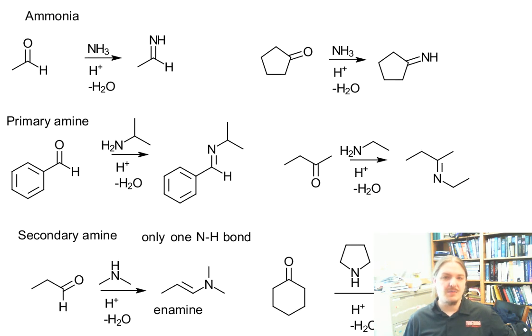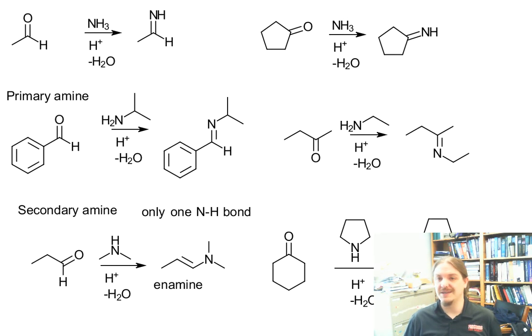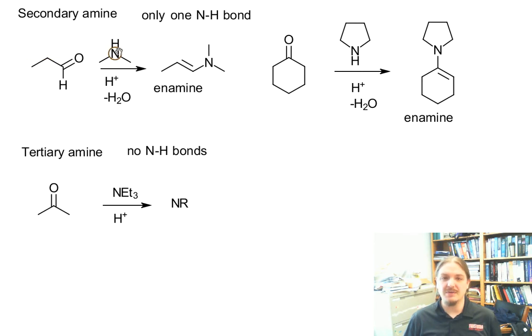To summarize: ammonia reacts with aldehydes and ketones to make imines with two N-H bonds. Primary amines react with aldehydes and ketones to make imines with a nitrogen-carbon double bond, and these have stereochemistry. Secondary amines, because they only have one N-H bond, can react with aldehydes and ketones, but they make enamines instead, which is the topic of an upcoming video. Tertiary amines don't react with aldehydes and ketones, so they have no appreciable reaction. Thank you for watching.